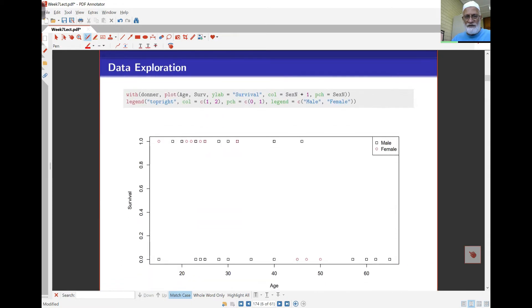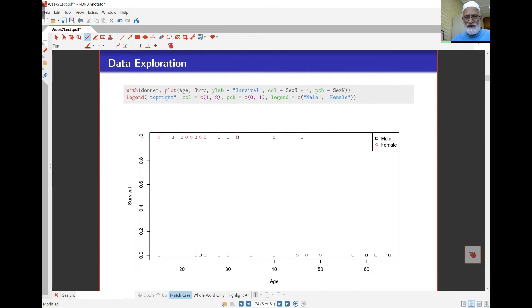Here's a plot of the data of survival with respect to age, with gender superimposed here as the color code and symbol. The square indicates male and the red circle indicates female.